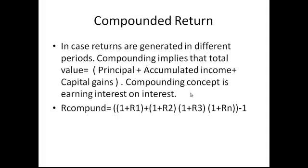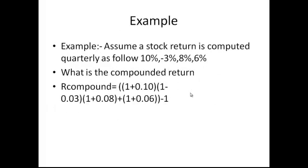Let's have an example about compounding return. Assume that stock return is compounded quarterly as follows: 10%, -3%, 8%, and 6%. What's the compounded return? We put the numbers: (1+0.10)(1-0.03)(1+0.08)(1+0.06)-1.